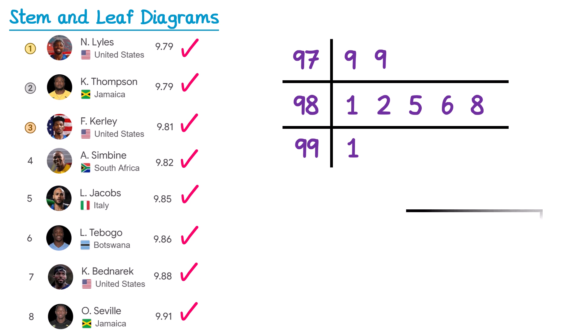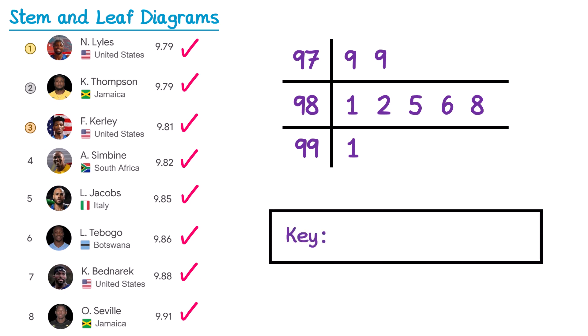Now that we've entered all of the times we need to add the key — this is particularly important because we need to make it clear that these times were actually decimals. It didn't take Noah Lyles 979 seconds to run 100 metres. So we write 97, then a vertical line, then 9, and the key states that this represents 9.79 seconds.